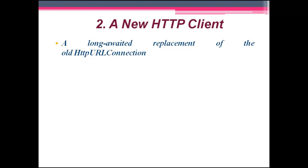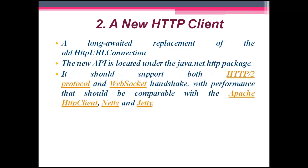The second new feature is the new HTTP client. After a long time, a replacement for the old HttpURLConnection was released in Java 9. The new API is located under the java.net.http package. It supports both HTTP/2 protocol and WebSocket handshake, with performance comparable to Apache HTTP Client, Netty, and Jetty.